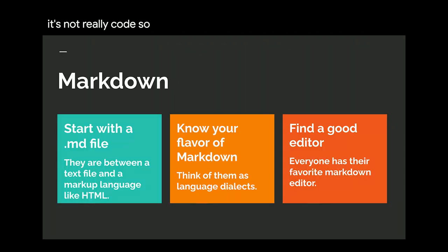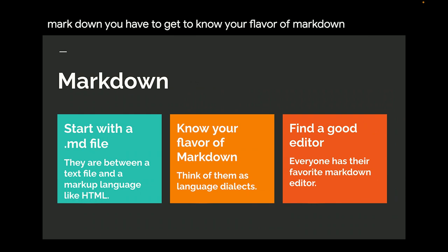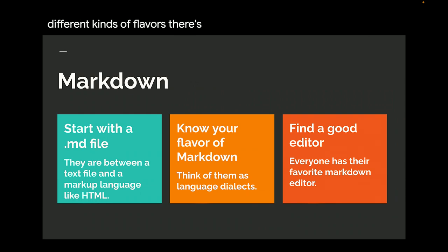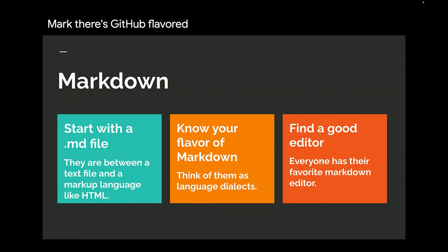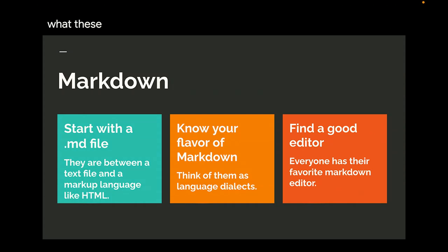The basics before the demo: you have to start with an MD file — get rid of the TXT extension so your editor knows you're writing in Markdown. You also need to get to know your flavor of Markdown. There's Common Markdown, Common Mark, GitHub flavored Markdown, and GitLab flavored Markdown. I think of them as dialects — like the difference between someone from California and someone from Texas. Just understand what flavor you want to use.